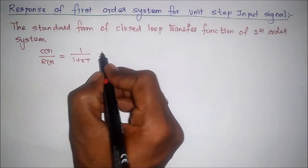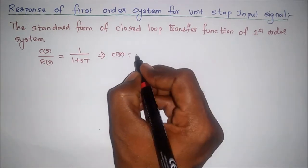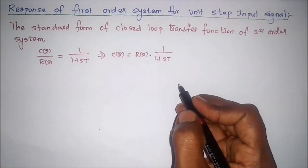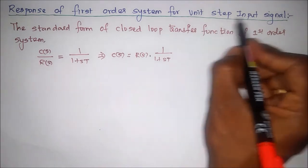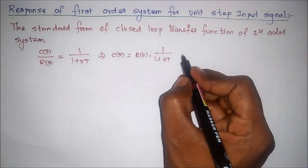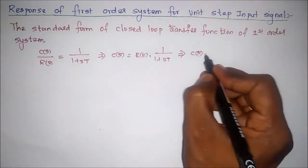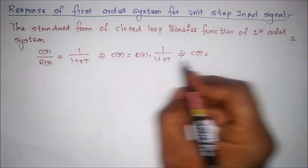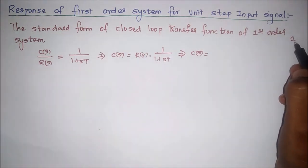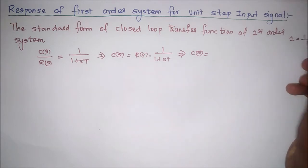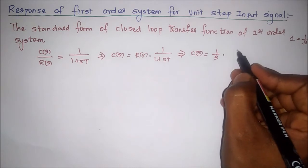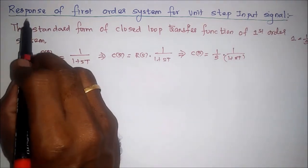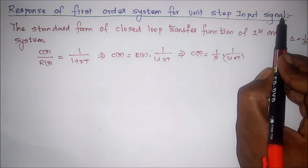The response or output C(s) equals R(s) into the transfer function 1 by (1 plus sT). Now according to the concept, we have to substitute the unit step input signal. We know the time response of the unit step is 1, and its Laplace transform is 1 by s. Therefore R(s) equals 1 by s, so C(s) equals 1 by s into (1 plus sT).